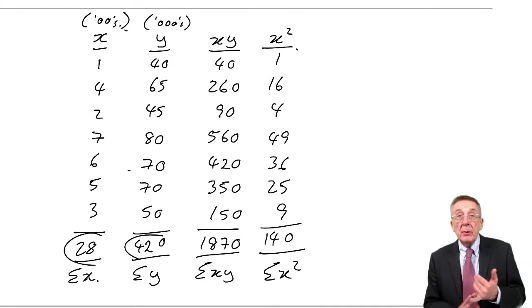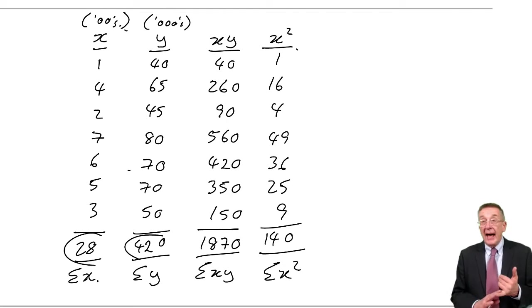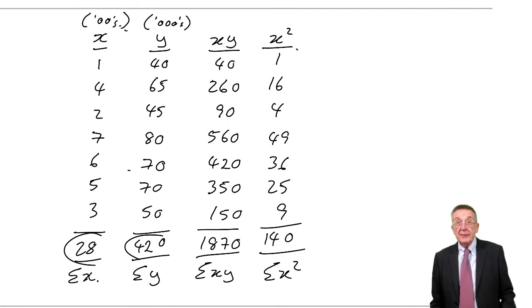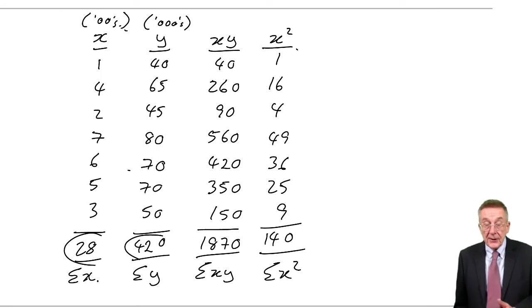In the first lecture, we revised the high-low method. In the second and the last lecture, we looked at regression and a better way of finding the fixed and variable cost.